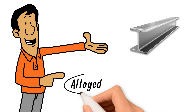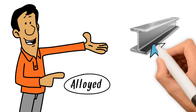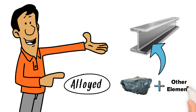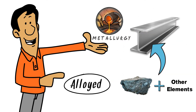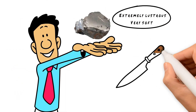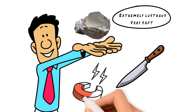On the other hand, steel is alloyed, and this means that to get steel, you have to mix iron with other elements. You can make all types of alloy steel by using the science of metallurgy. Pure iron is extremely lustrous and very soft — pure iron can be cut with a knife and is very easy to magnetize.